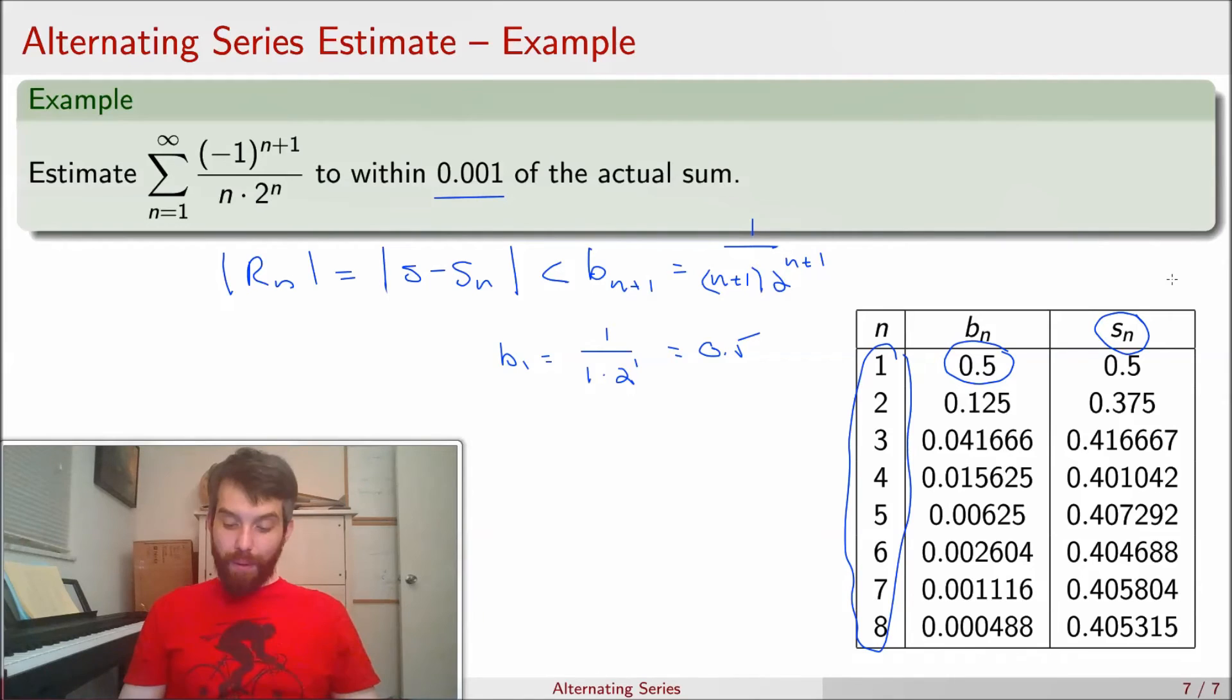Alright, so how far do I actually have to look on my table? So it said estimate to within 0.001. So I look at the bn, those are going to be my estimates. Going along, down, down, down, and right here, at this very bottom line, I finally got to enough. This is a number less than 0.001. This is less than 0.001.